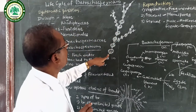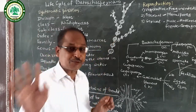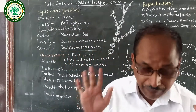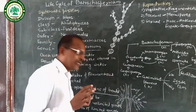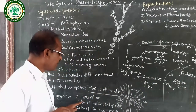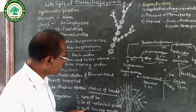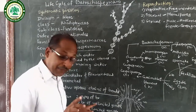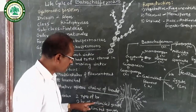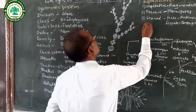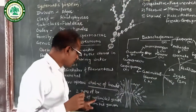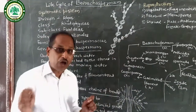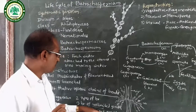The thallus structure of Batrachospermum shows a main axis, on which there are two types of branches: branches of limited growth and branches of unlimited growth. Branches of unlimited growth means their growth is continuous. Branches of limited growth means their growth is stopped.